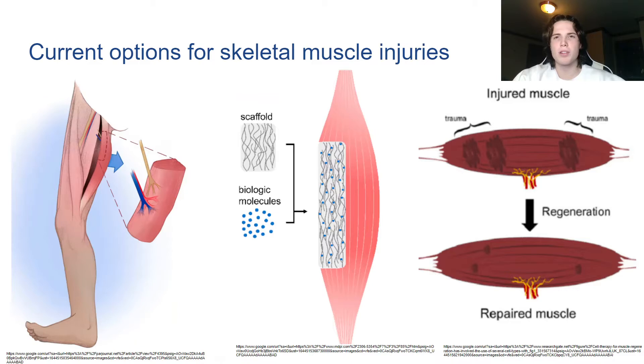The current options for a skeletal muscle injury are muscle transplants, bio mesh scaffolds, and cell regrowth therapy.